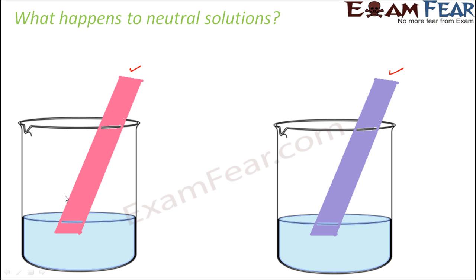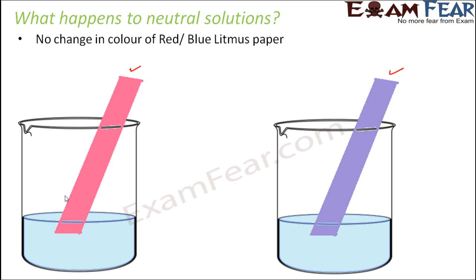This is very important — please do not get confused. Whenever you are asked how to perform the litmus test for a neutral solution, make sure you mention that you have to check it with both red and blue litmus paper. Only then can you conclude that the solution is actually neutral. No change in color of either red or blue litmus paper when placed in a neutral solution.